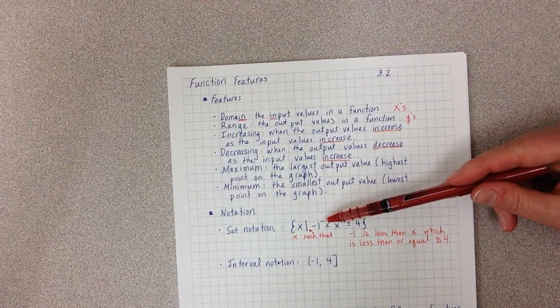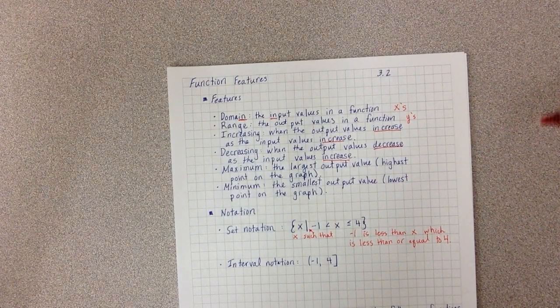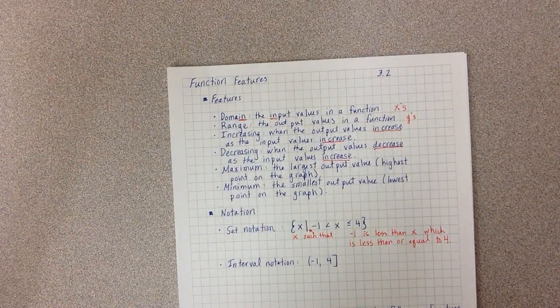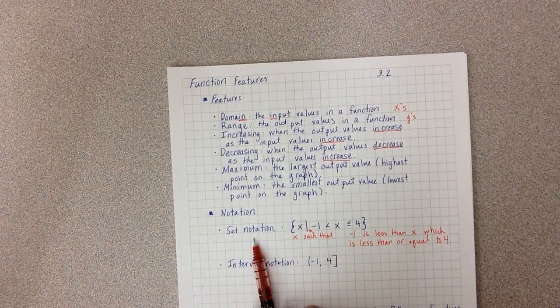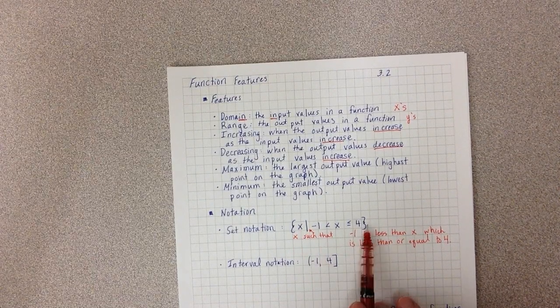Essentially, x is between the numbers negative 1 and 4. And we use curly Q brackets in the front and at the end. You've seen this type of notation before. We just gave it a fancy name and we added some fancy notation around it.